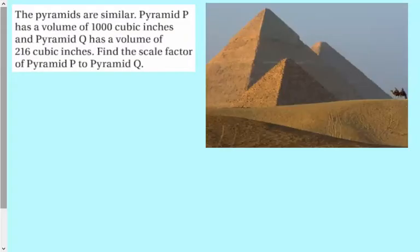Okay, we did that. The pyramids are similar. Pyramid P has a volume of 1000 cubic units and pyramid Q has a volume of 216 cubic units. So the scale factor pyramid P to pyramid Q, we're going to go backwards now. So we've seen this skill before. We're going to, the scale factor of pyramid P which has a volume, the volume ratio is 1000 over 216. And so what we want to do is we want to find the cube root.